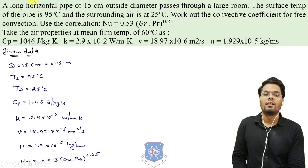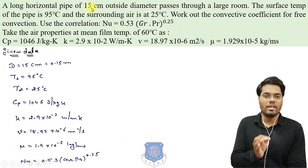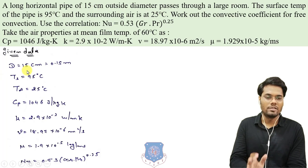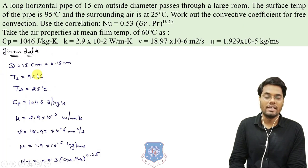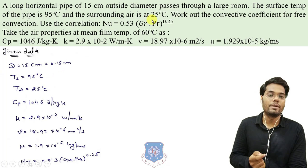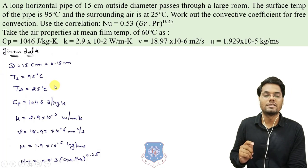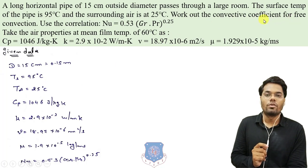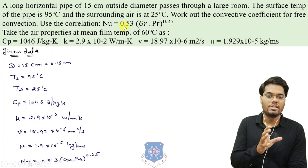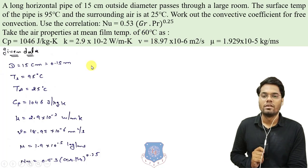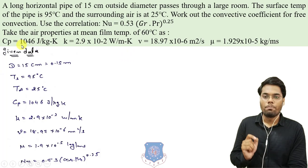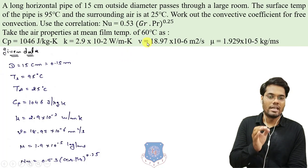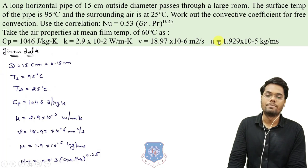Moving to the next question. A long horizontal pipe of 15 centimeter outside diameter passes through a large room. The surface temperature of the pipe is 95°C, and the surrounding air temperature is 25°C. We need to find the convective coefficient for free convection. The mean film temperature is (95 + 25)/2 = 60°C. At 60°C the properties — specific heat, conductivity, viscosity, kinematic viscosity, and dynamic viscosity — are given in the question.